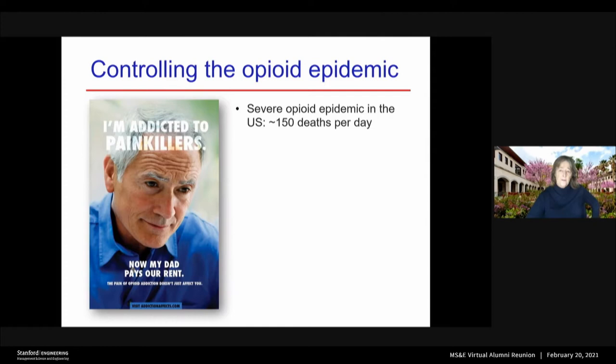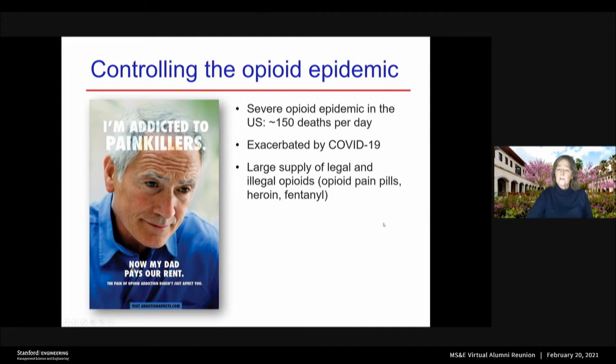Approximately 150 people per day are dying right now in the United States from opioid overdose. We've always had an opioid epidemic, at least for the last decade or so, but it's been exacerbated by COVID-19.